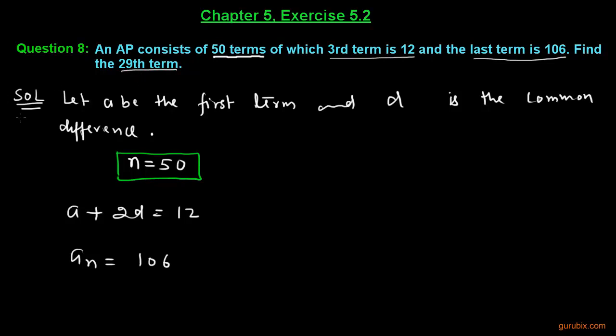Let us see how to solve this question. First of all, we have to let the first term and the common difference. So we write: let A be the first term and D be the common difference. We are given that the number of terms is 50, this means n equals 50.